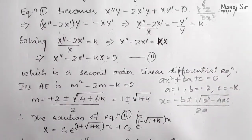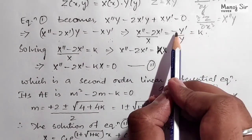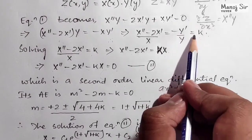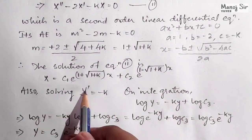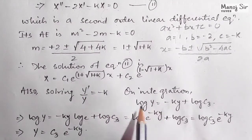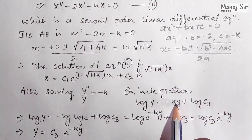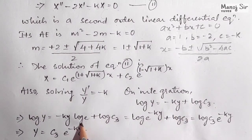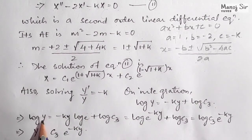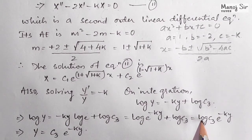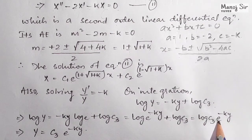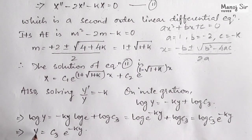Now we find Y by equating minus Y' upon Y equals k, so Y' upon Y equals minus k. Integrating both sides: log Y equals minus k·y plus log c3. Multiplying the middle term by log e (whose value is 1) and applying log a plus log b equals log(a·b), we get log Y equals log(c3 times e to the power minus k·y). Therefore Y equals c3 times e to the power minus k·y.